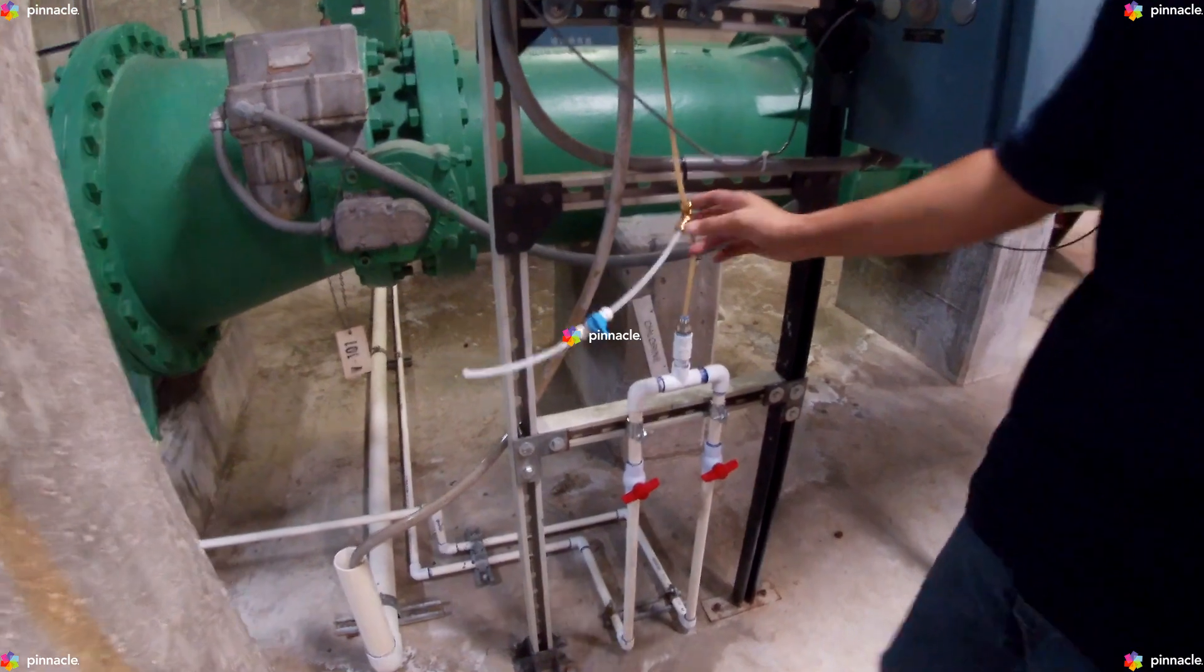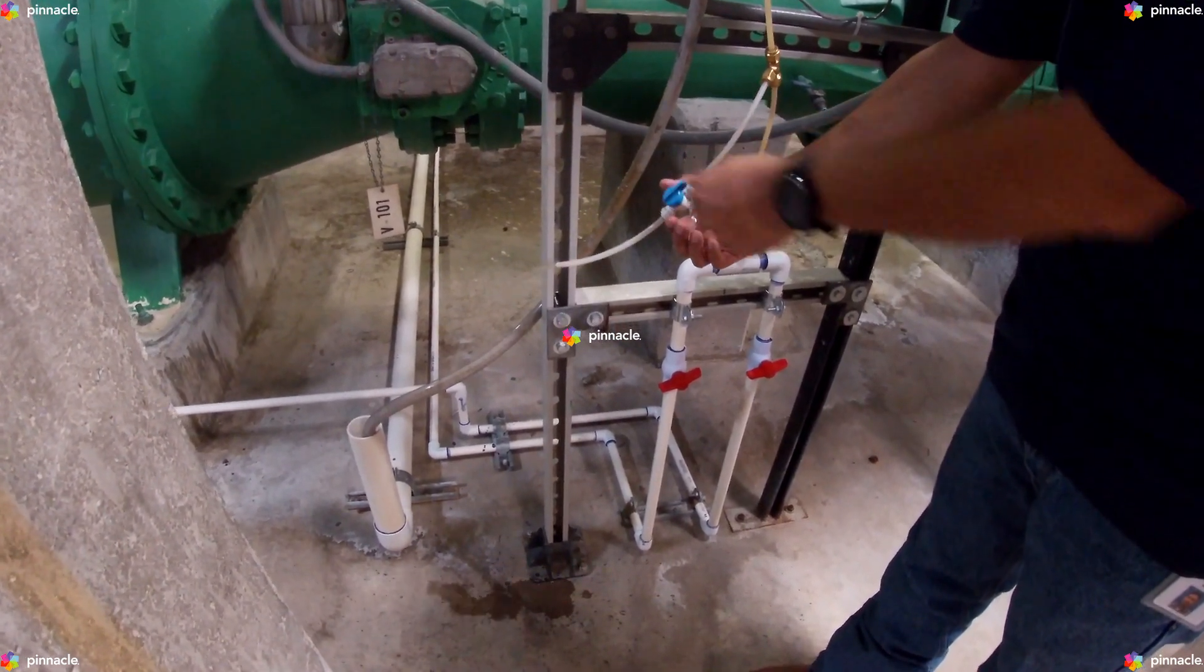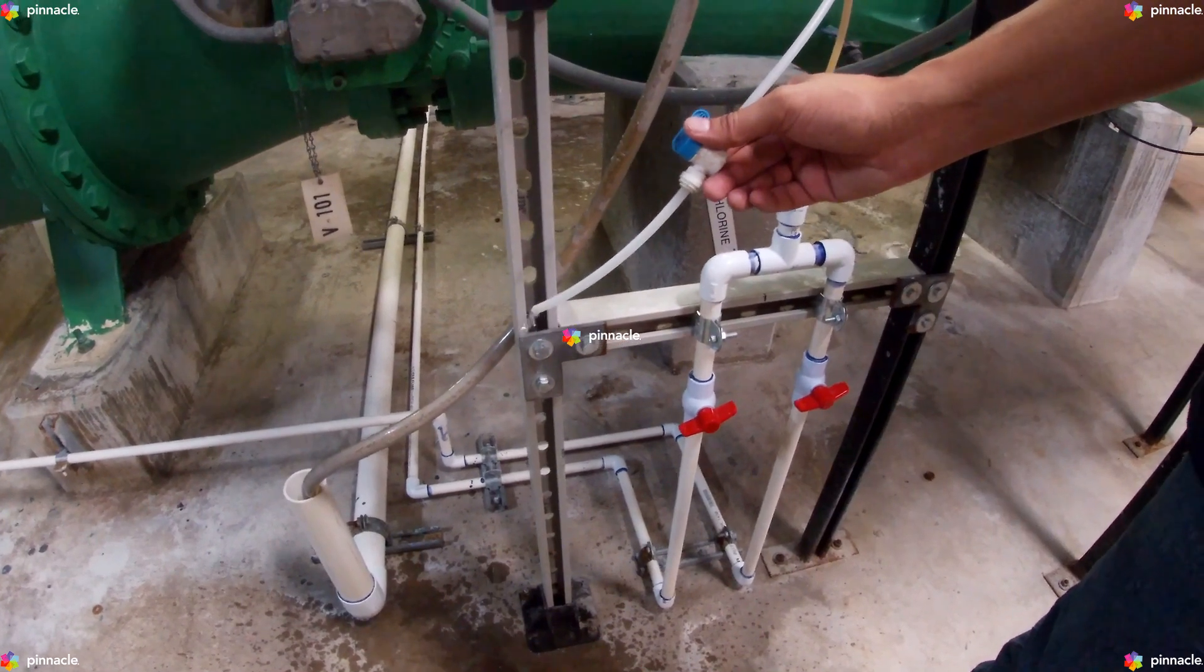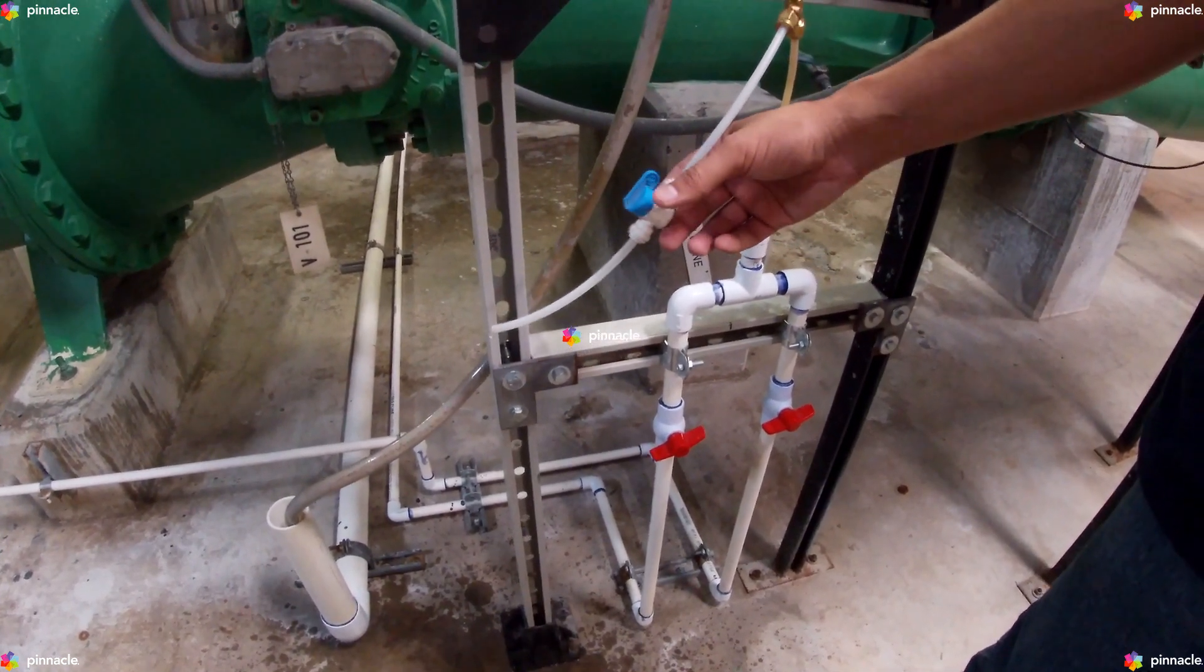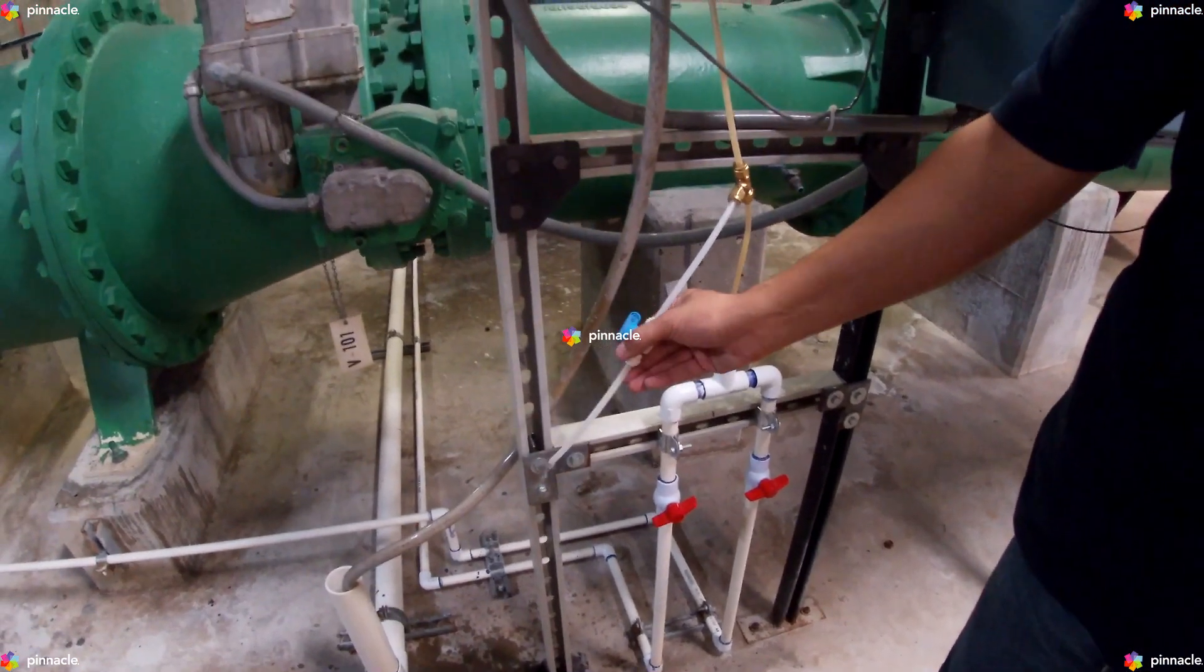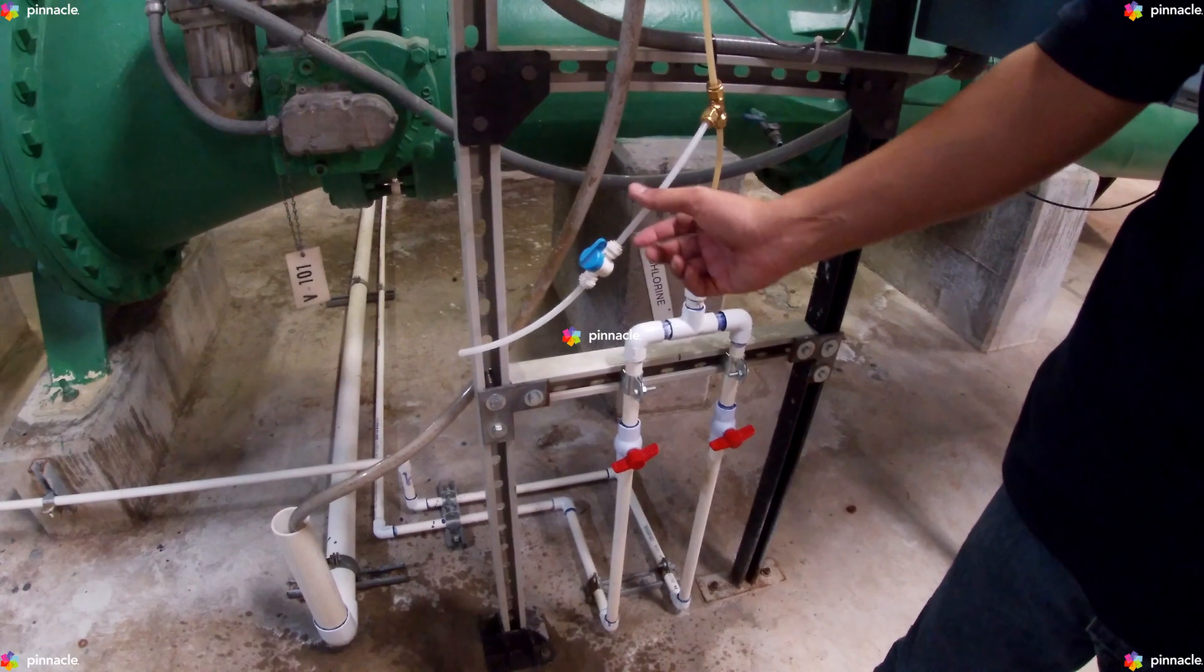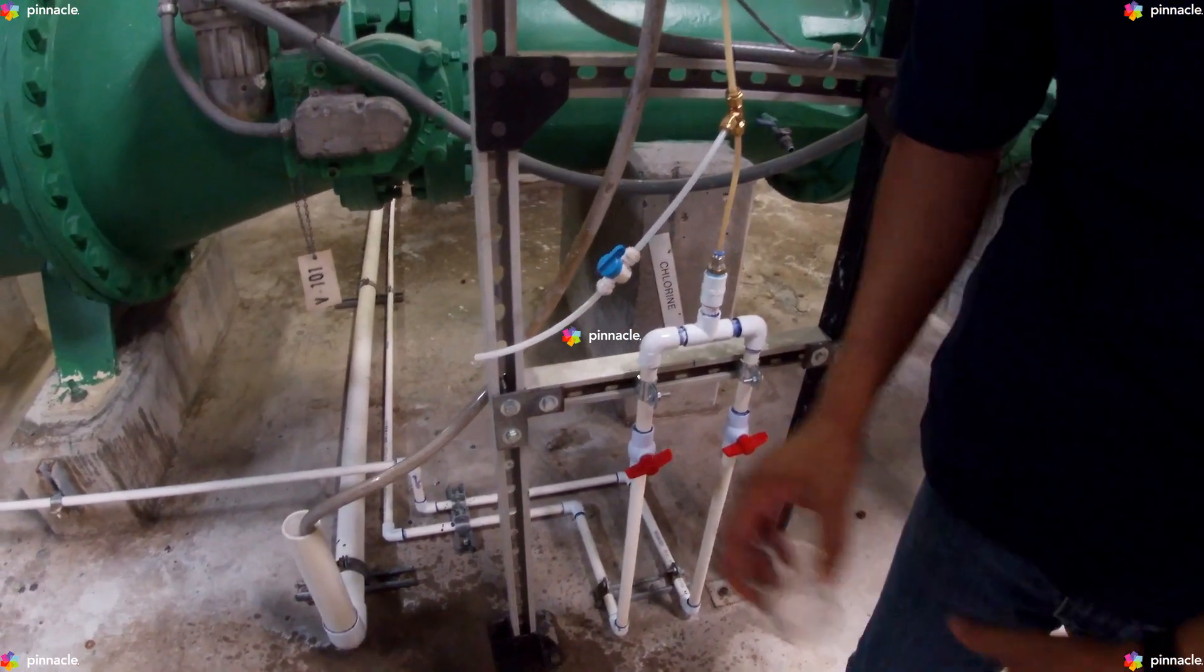We will begin by flushing our sample line. Once we have properly flushed our sample line, we can move on to collecting our sample. We will need to collect at least 40 milliliters of sample.